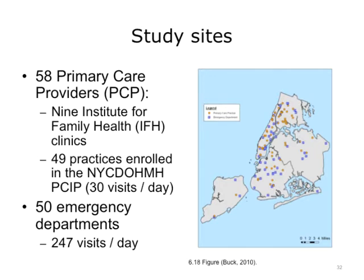The study sites included 58 primary care practices — 9 from the Institute for Family Health (IFH) and 49 practices enrolled in the NYC DOHMH Primary Care Information Project — generally small practices averaging about 30 visits a day. Fifty emergency room departments were included, averaging about 250 visits a day. The primary care practices and EDs were similarly distributed across the five boroughs of New York City.